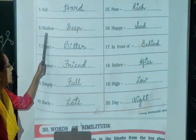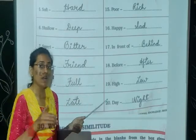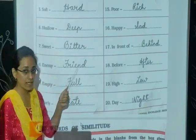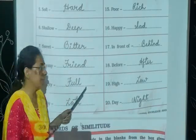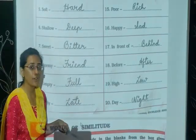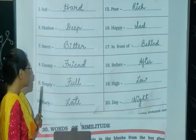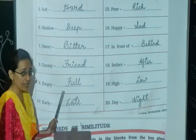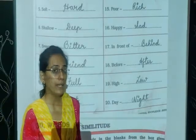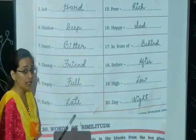The opposite of shallow is deep. The opposite of sweet will be bitter. The opposite of enemy will be friendly. The opposite of empty will be full. The opposite of early is late.